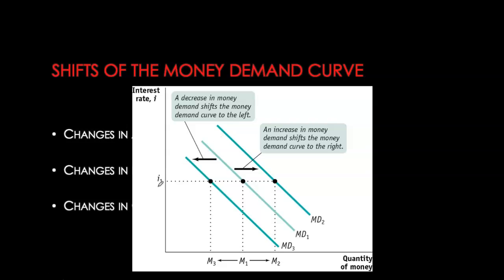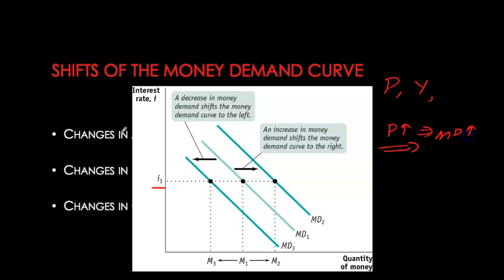In the diagram, for any given interest rate i1, if any of these factors — price level, real GDP, credit markets, or banking technology — cause quantity demanded to increase at that interest rate, the money demand curve shifts to the right. If a factor increases the benefit from holding cash, money demand increases. If a factor increases the cost of holding money balances, money demand decreases and shifts to the left.